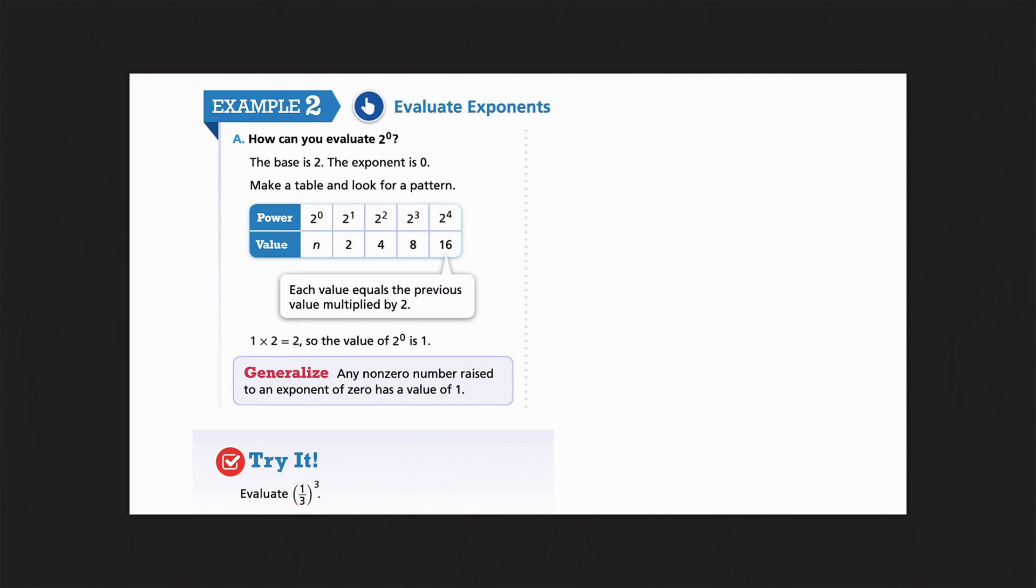So, we are going to start off by writing. Let me get a different marker color here. We're going to start off by writing what the problem says. Okay. 1 3rd to the 3rd power. In this problem, our base is 1 3rd. Our exponent is 3. So, this is the one that's going to be repeated. This one tells us how many times we'll repeat it in multiplication. So, I'm going to go ahead and do 1 3rd times 1 3rd times 1 3rd.